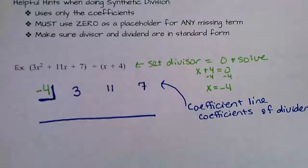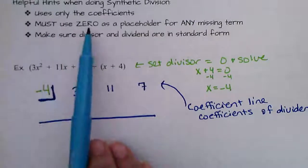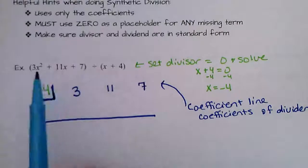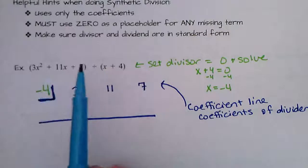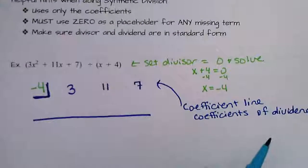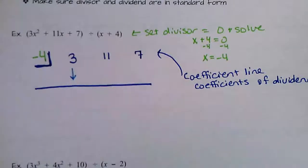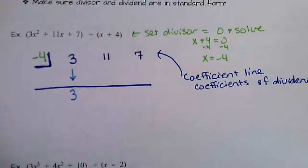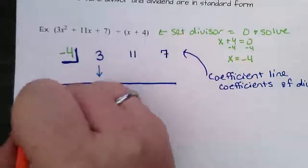The thing before the division sign goes on the coefficient line; the thing after the division sign gets set equal to zero and goes in the box. Also, remember: use zero as a placeholder for any skipped degree. This example goes degree 2, degree 1, degree 0 — it counts down without skipping anything, so I don't need a placeholder here. The first number on the coefficient line simply drops straight down below the line.